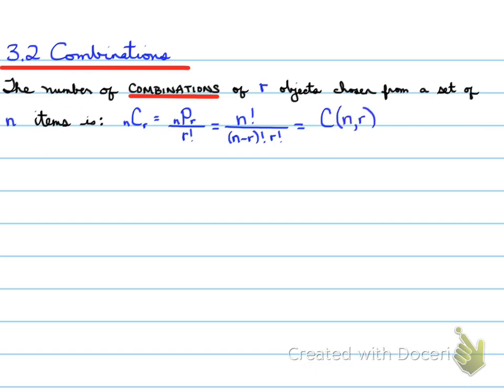C at N R is the same as NCR. Another way to write combination notation is writing it like that, without a C or anything. It's a bracket with N on top and R on the bottom. Note that in combinations, order doesn't matter. It doesn't matter which order you select items.